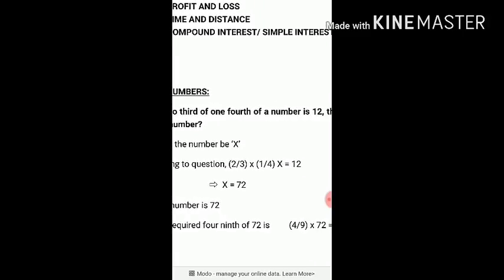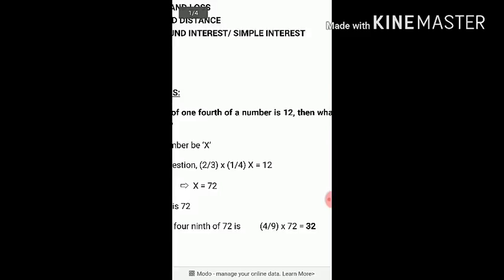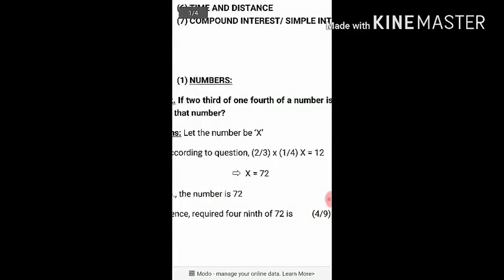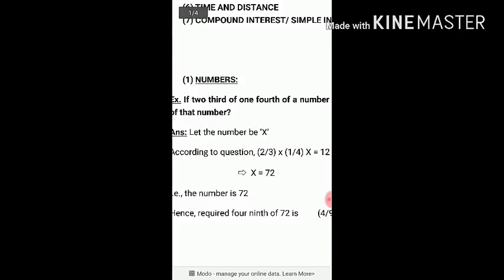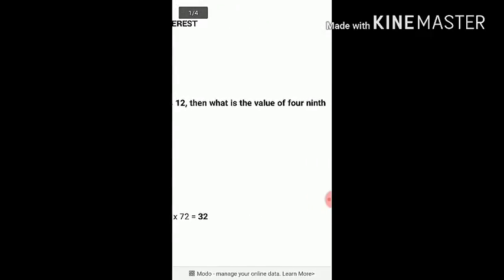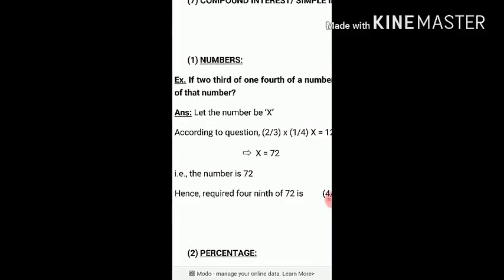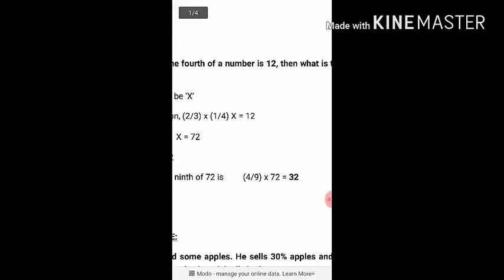According to the question, 2/3 into 1/4 into x is equal to 12. Solving this, x will be 72. So the number is 72. Now, what is the value of 4/9 of that number? 4/9 into 72 equals 32. So the answer is 32.